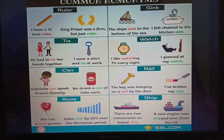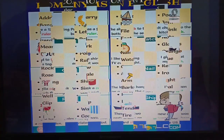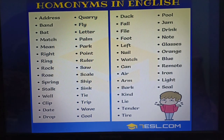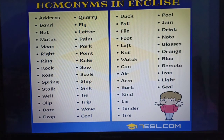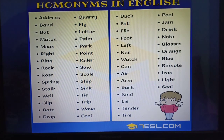Here are some more common homonyms: ruler, tie, can, rose, sink, watch, nail, ship. This is a complete list of homonyms in English: address, band, bat, match, mean, right, ring, rock, rose, spring, stalk, well, clip, date, drop, query, fly, letter, palm, park, point, ruler, saw, scale, ship, sink, tie, trip, wave, cool, duck, fall, file, foot, left, nail, watch, can, air, arm, bark, kind, lie, tender, tire, pool, jam, drink, note, glasses, orange, blue, remote, iron, light, seal.